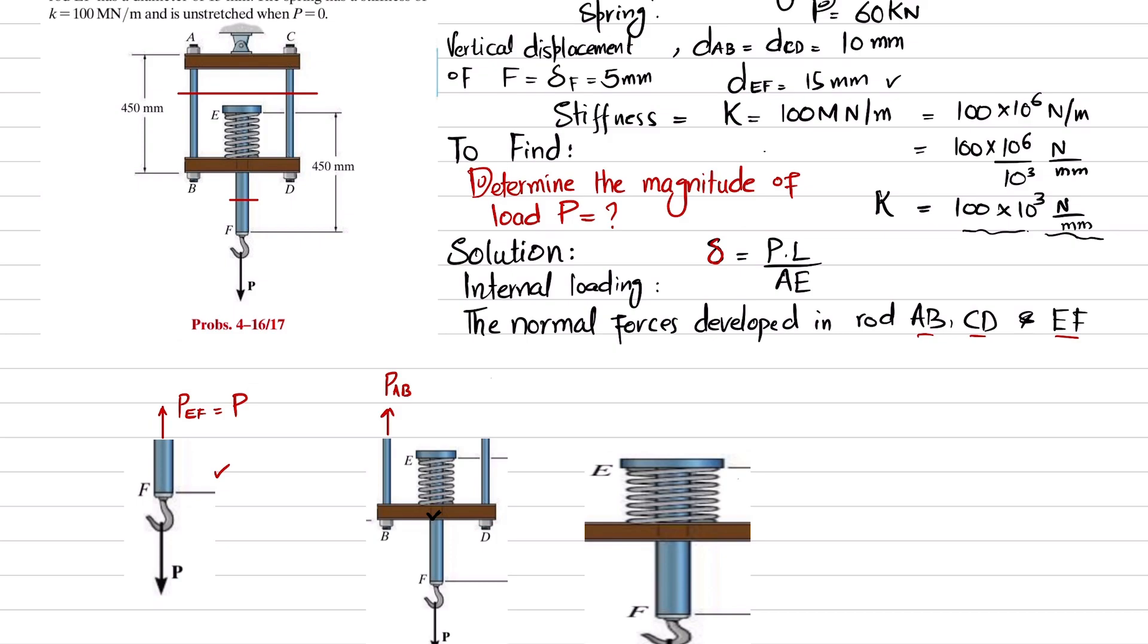When you cut it, you can see that P is downward, so in order to counterbalance it, P_AB and P_CD will be equal to P/2, because this P is divided in these two rods. Same thing here: P is applied at this end, so this will cause it to move downwards.